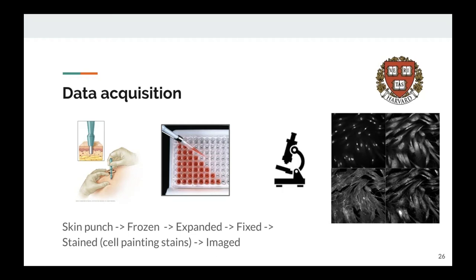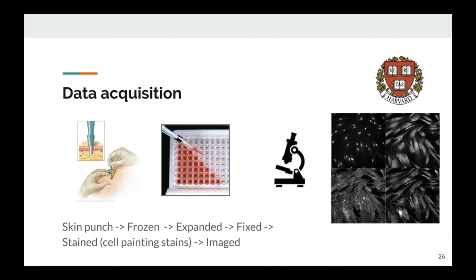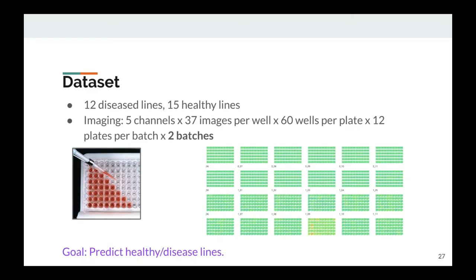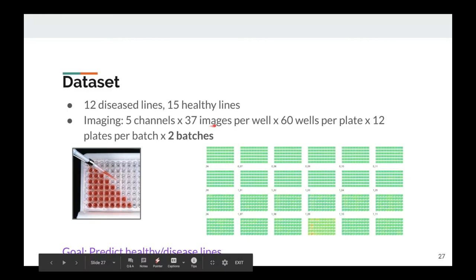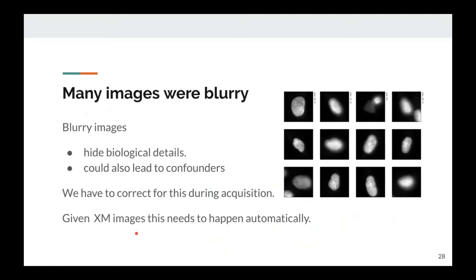In collaboration with a group at Harvard, we got skin cells from patients by taking a punch from the skin. The cells are frozen, grown up in dishes, then fixed and stained so we can image them. With multiple stains, you can highlight different things. We had 27 distinct patients, but with many images per well, 60 wells per plate, 12 plates per batch, and two separate batches, this becomes quite a bit of data. We started by asking: can we separate healthy and diseased patients? But first we ran into a problem — many images were blurry.